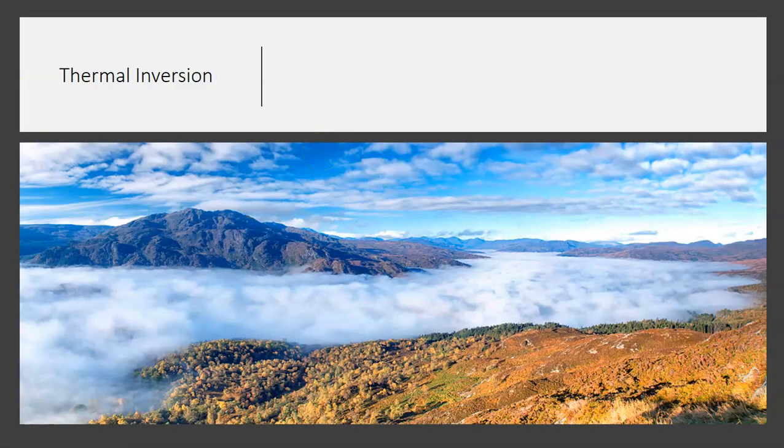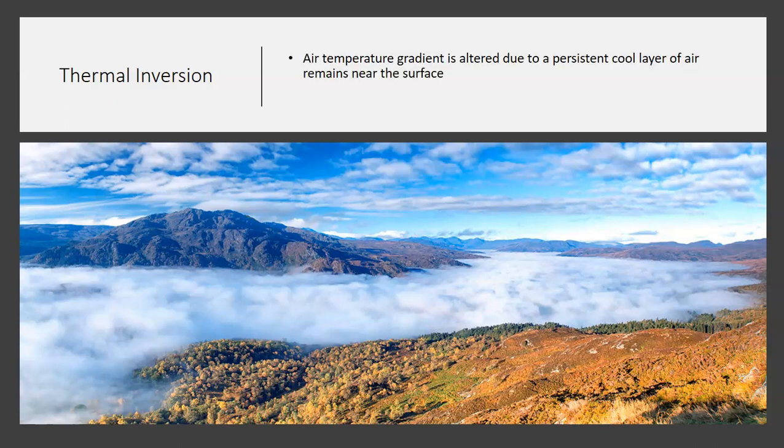In the troposphere where we live, this is primarily where we're going to focus our attention. We are really looking at a general decrease in temperature with altitude. Now, there is something called a thermal inversion. And here in Walla Walla, or if you happen to live somewhere perhaps like Salt Lake City, you ought to be well familiar with this idea of a thermal inversion. What happens with a thermal inversion is that the air temperature gradient is altered due to a persistent cool layer of air that remains near the surface.